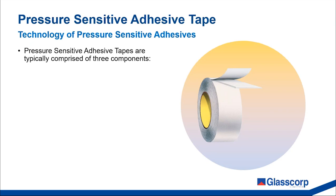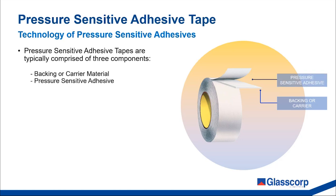Pressure sensitive adhesive tapes are typically comprised of three basic components. The backing or carrier material is the part of the tape that the adhesive gets coated to — there are many different materials this could be made of, including paper, plastic film, cloth, foam, or foil. The backing will be coated with a pressure sensitive adhesive, which will vary depending on the type of application and environment the tape is designed for. Examples of adhesives include acrylic, epoxies, rubber-based adhesives, and silicone adhesives.